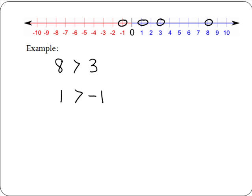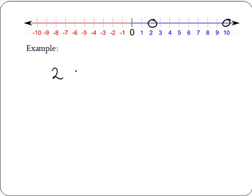Now let's look at some examples of less than. A simple example: if we take the numbers 10 and 2, we know that 2 is less than 10, and we can write this as 2 is less than 10. Next, let's take the numbers minus 4 and minus 9. If we think about these in terms of temperatures, minus 9 degrees is colder than minus 4 degrees. So minus 9 is less than minus 4, and we write this as minus 9 is less than minus 4.